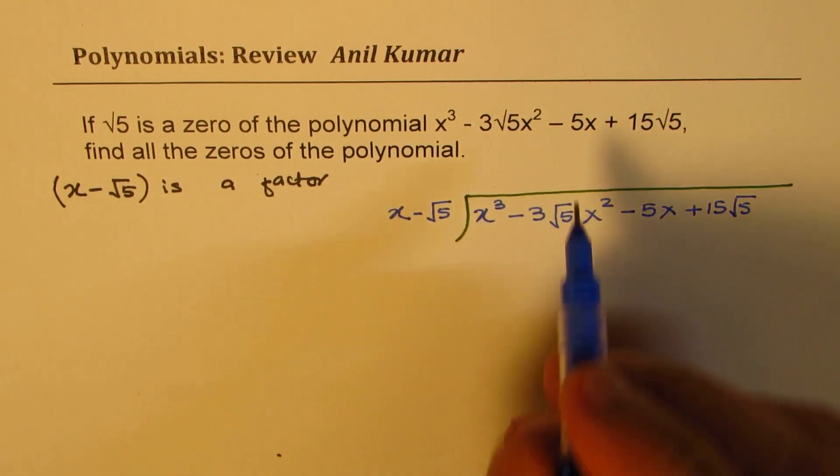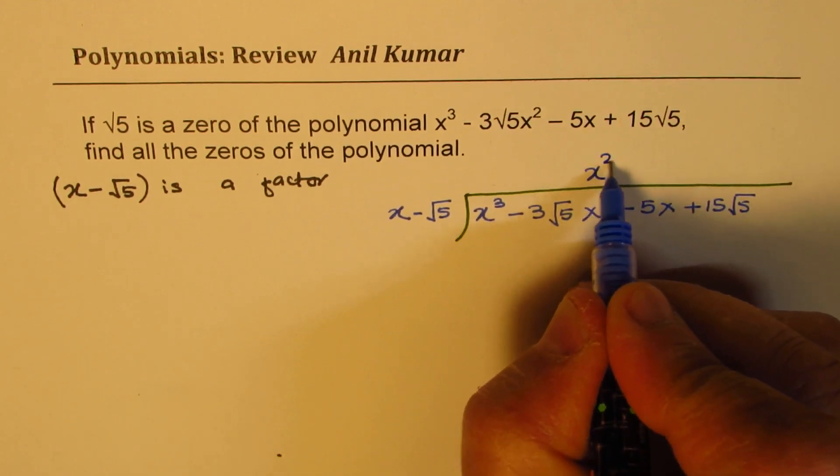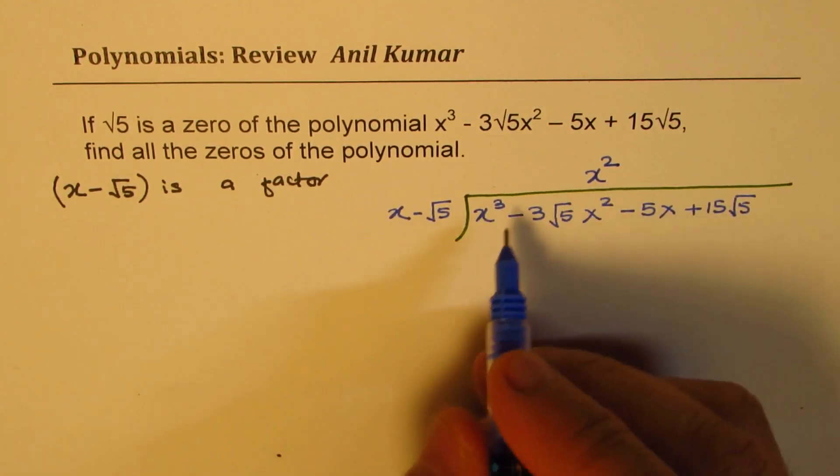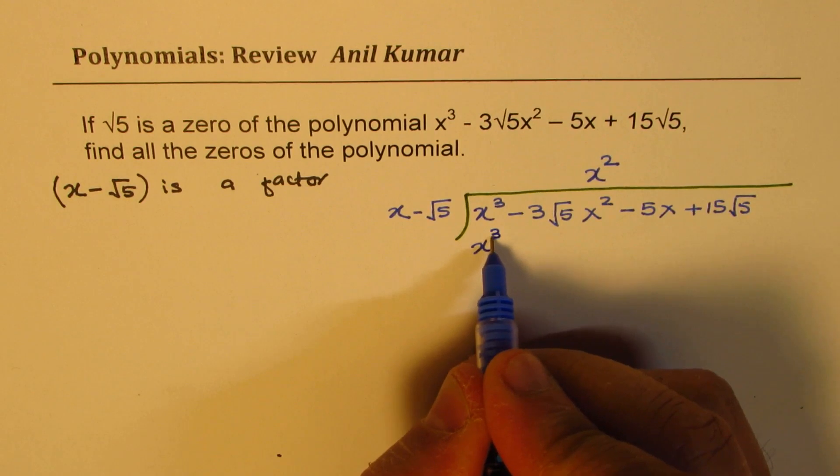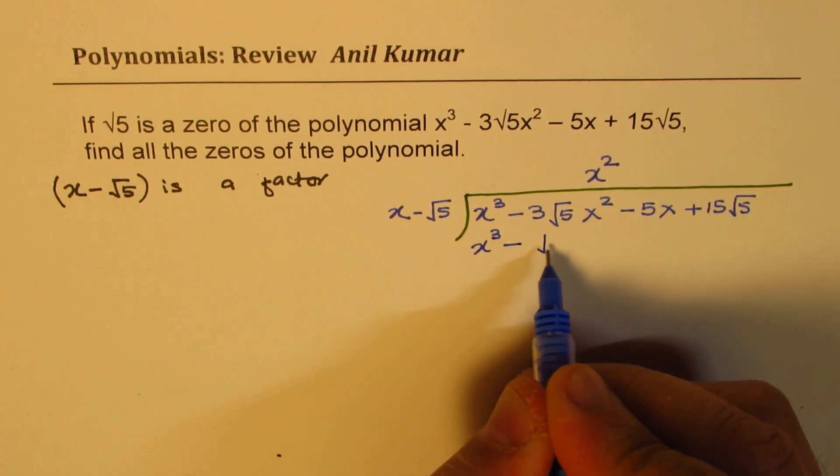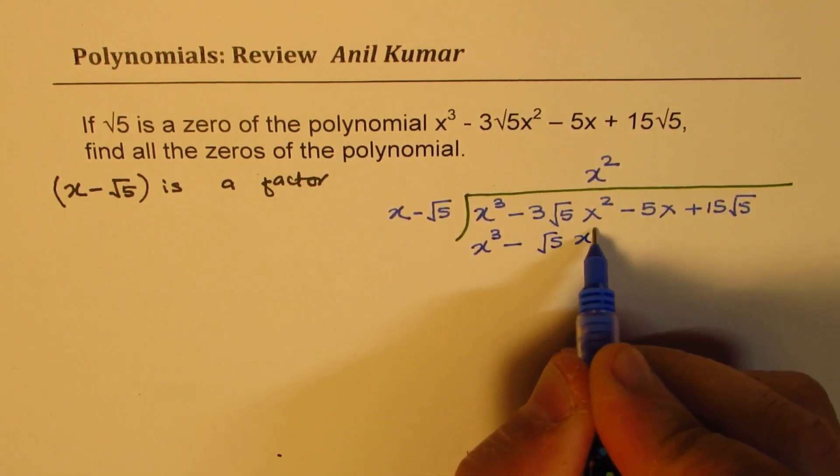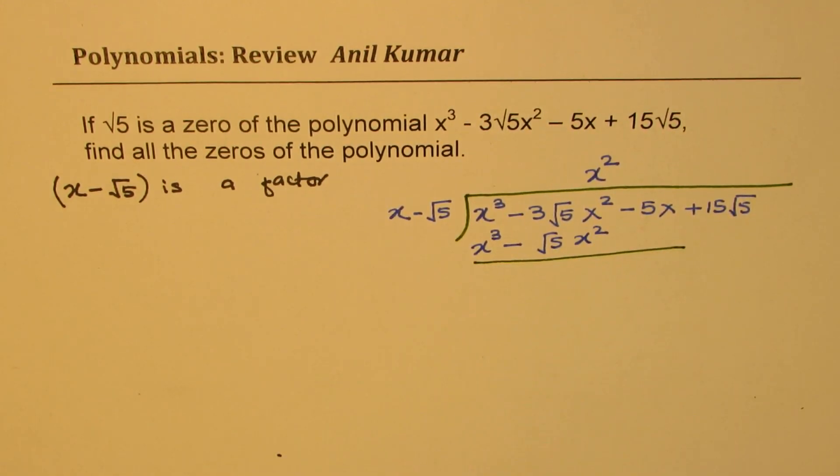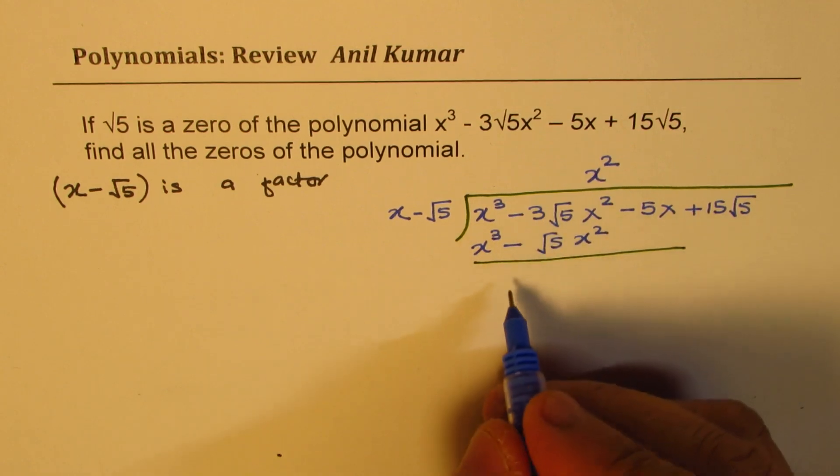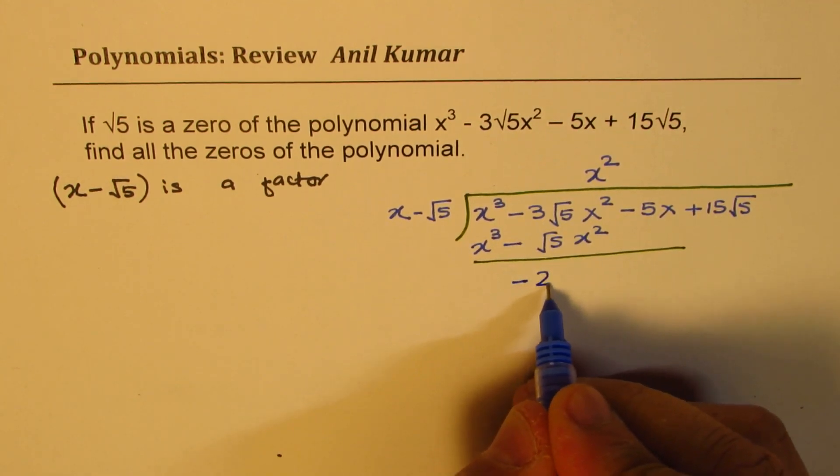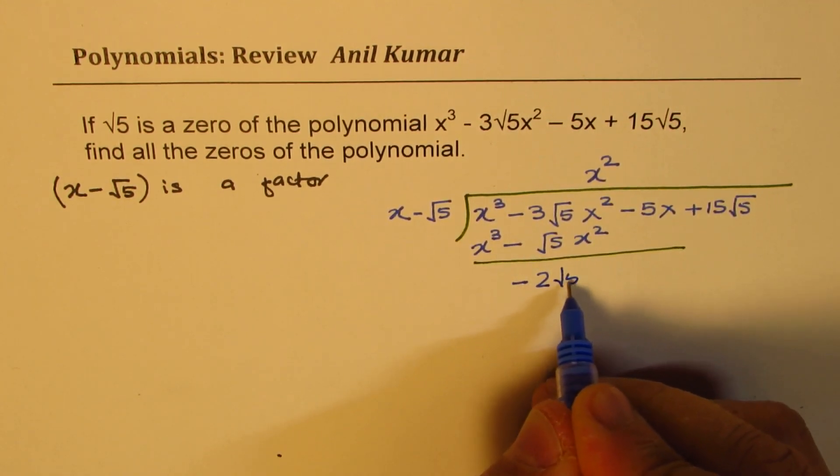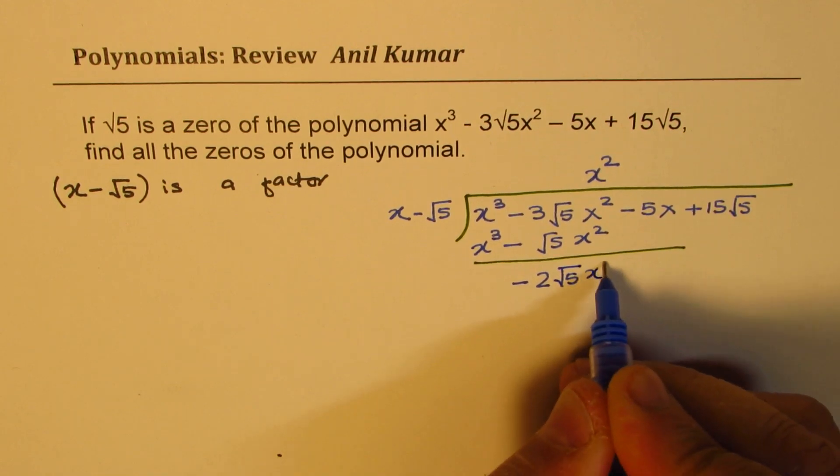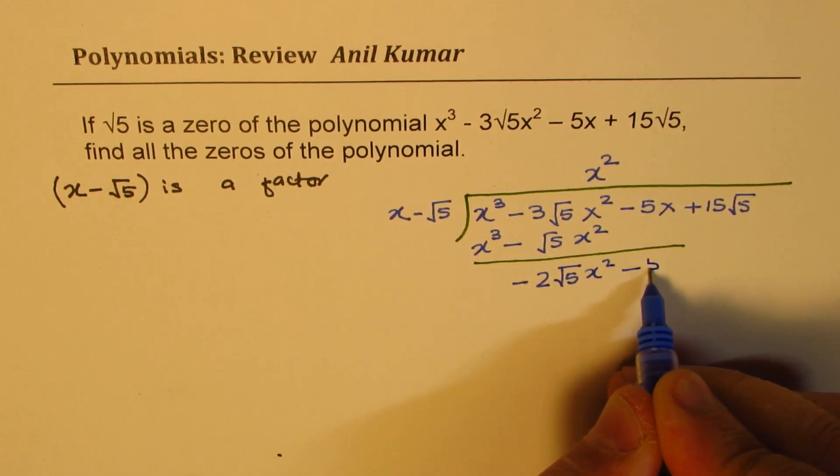So the first term should be x squared in the quotient. When you multiply, you get x cubed minus square root 5 x squared. Now, if you take the difference, we get minus 2 square root 5 x squared minus 5x.